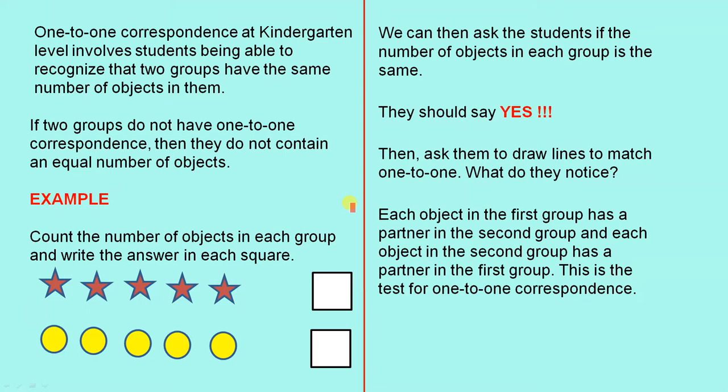Here's a simple example. Count the number of objects in each group and write the answer in each square. So they would count these objects here and write five. They would count these ones and write five.